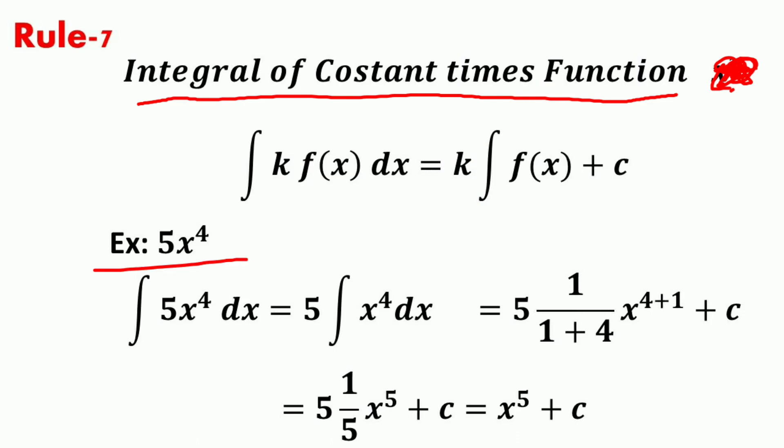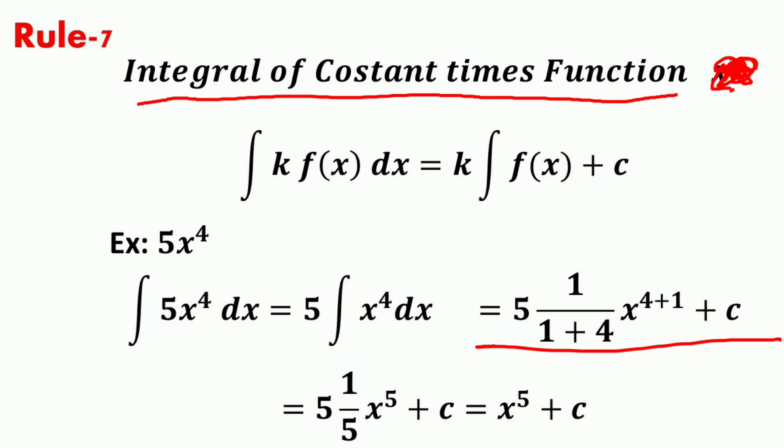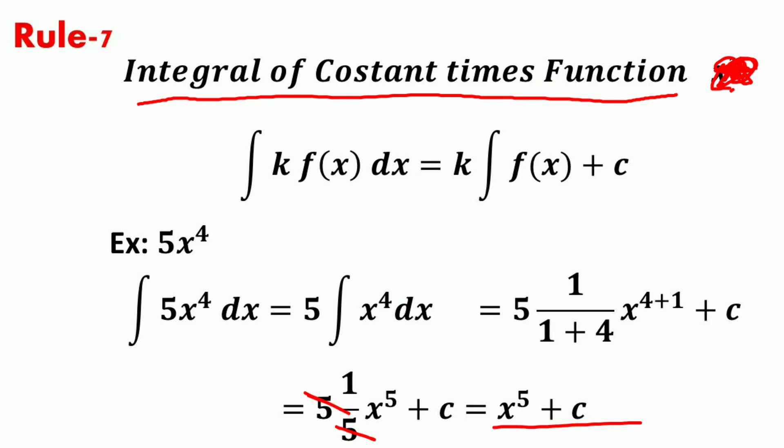For example, the integral of 5x^4 dx equals 5 times the integral of x^4 dx, which equals 5 times (1/(1+4)) · x^(4+1) plus c. That is 5 times (1/5)x^5 plus c, and the 5's cancel, giving x^5 plus c.